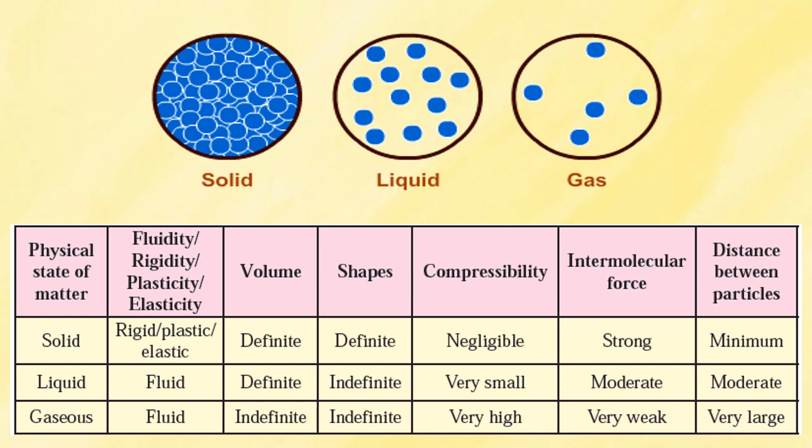For liquids: they are fluid, meaning they can flow. They have definite volume but no particular shape — liquids occupy the shape of the container in which they are placed. Compressibility is very small. Intermolecular force is moderate and the distance between particles in liquids is also moderate. In the gaseous state: it is fluid. Volume is indefinite — gas does not have any definite volume, and gas does not have a definite shape either. Compressibility is very high. Intermolecular force is very, very weak, and the distance between particles is very large.